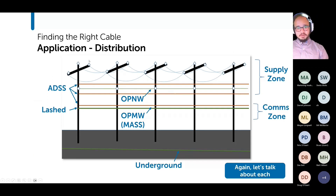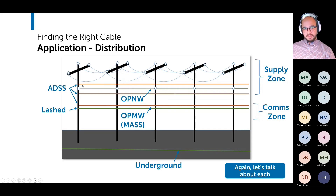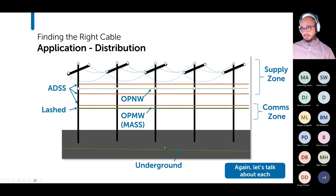Now we're in distribution. Here's a diagram showing ADSS either above or below the neutral wire, lash cables, optical neutral wire, and mass cables, as well as underground cables.